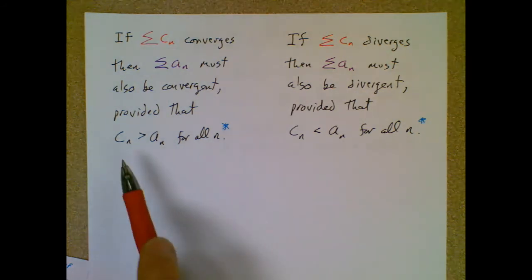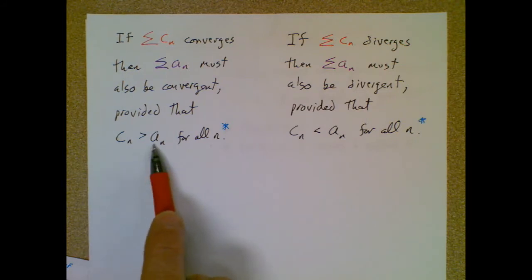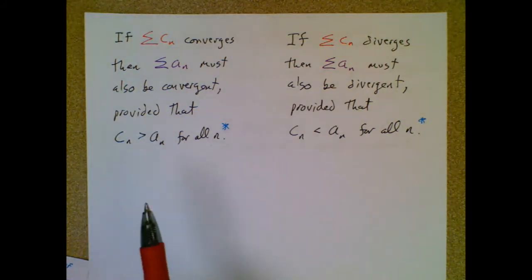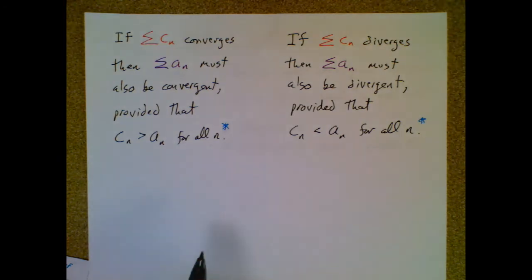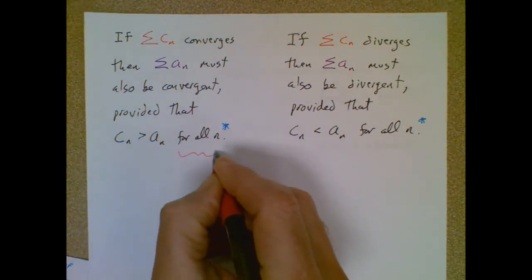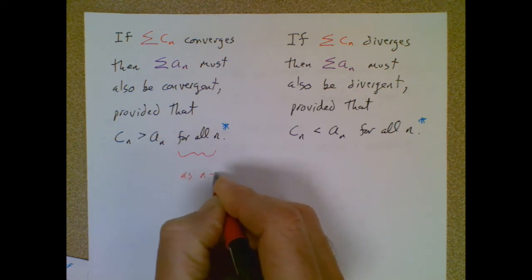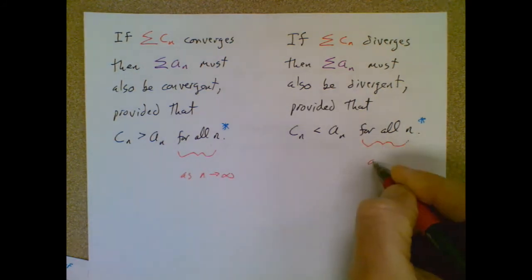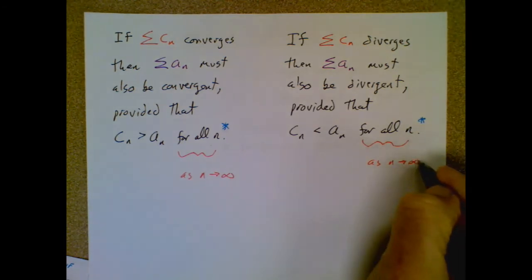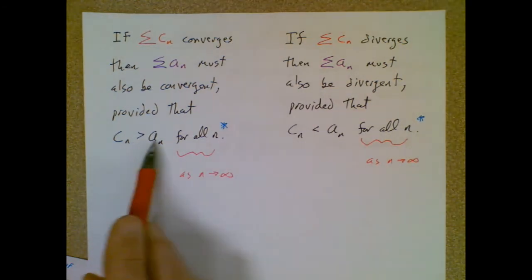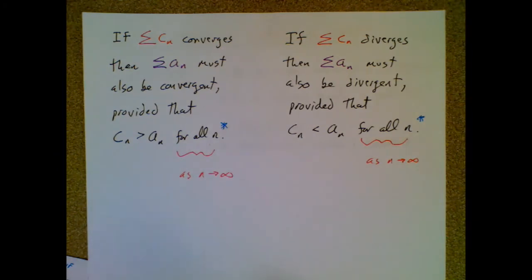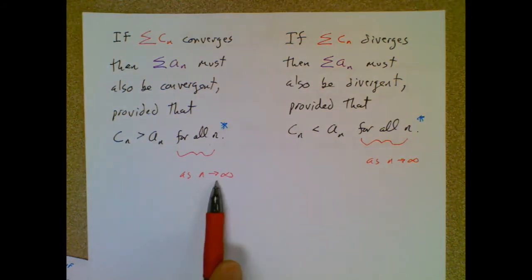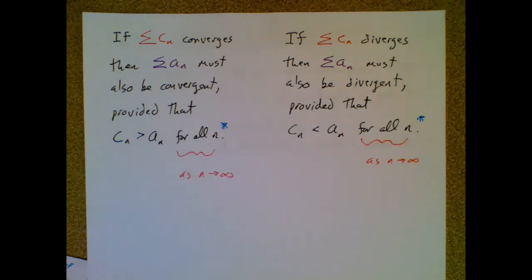I put a little asterisk — I say 'for all n,' but technically what this really means is as n approaches infinity. In some cases the greater-than or less-than relationship may not hold early on at n equals 1, 2, 3, 4, but by the time you get to n equals 5, 6, 7, 8 it turns to that relationship and continues on to infinity. So there is a little bit of wiggle room available there.